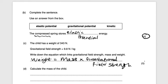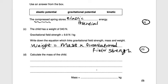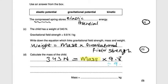Next question: calculate the mass of the child — worth three marks. We're given the weight of 343 newtons and gravitational field strength of 9.8. So 343 = mass × 9.8. To rearrange for mass, we divide both sides by 9.8, giving us 343 ÷ 9.8. Using a calculator, that gives an answer of 35.